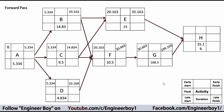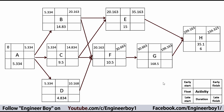Activity H has two predecessors, and we take the maximum — the early finish of activity G, which is 199.163. Add the duration of H to get the early finish of H. Now for the backward pass, the early finish and late finish of activity H are the same. Subtract the duration to get the late start, which is 199.